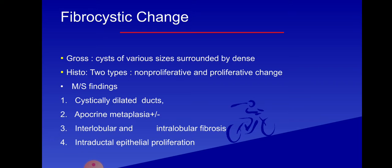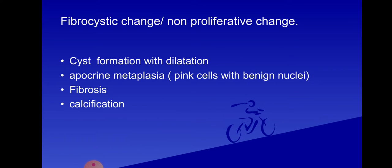Microscopically in fibrocystic changes, we see cystic dilatation of the ducts along with apocrine metaplasia — which may be present or absent. There is also interlobular and intralobular fibrosis and intraductal epithelial proliferation. We first discuss the non-proliferative type of fibrocystic changes.